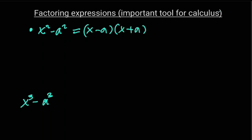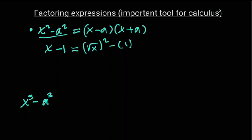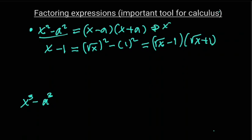It is important that sometimes you need to write expressions in this form. For example, x minus one can be written as square root of x squared minus one squared, since the square root of x squared is x and one squared is one. You then factorize this as root x minus one times root x plus one. In the special case where a is one, x squared minus one factors as x plus one times x minus one.